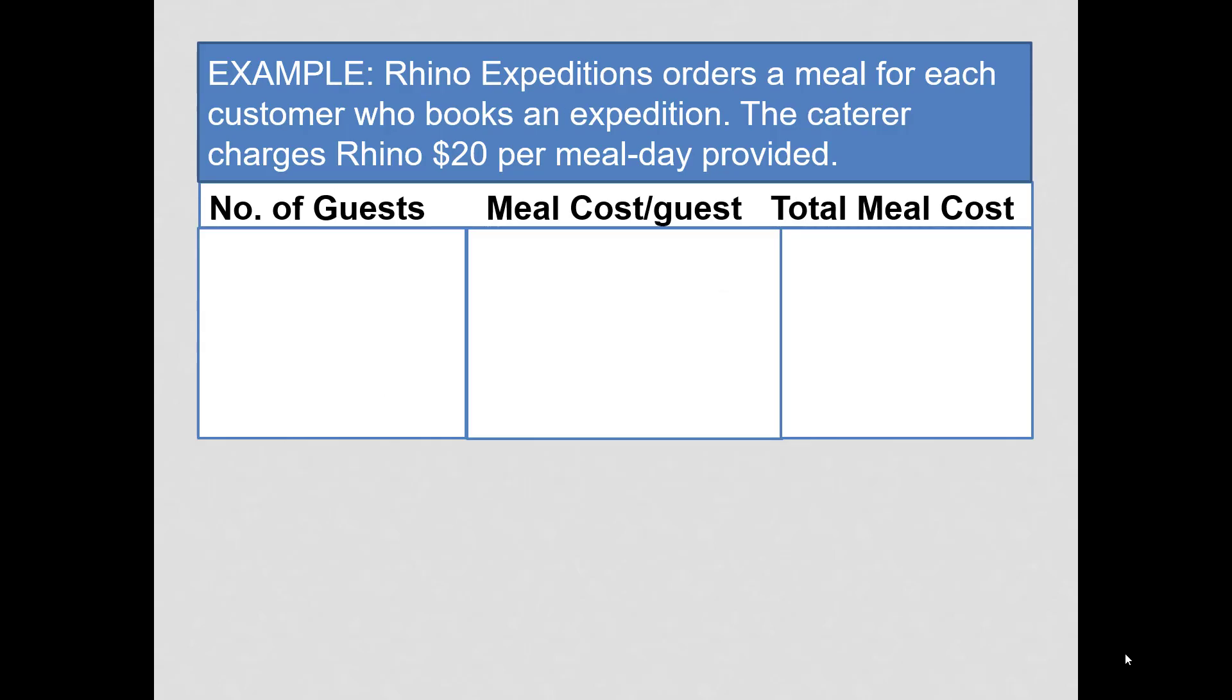Now, to demonstrate the behavior of the variable cost, let's assume Rhino Expeditions orders a meal for each customer who books an expedition. The caterer charges Rhino $20 per meal day provided. We'll look at four levels of activity. We'll look at if 250 guests go on an excursion, 500 guests, 750 guests, and 1,000 guests.